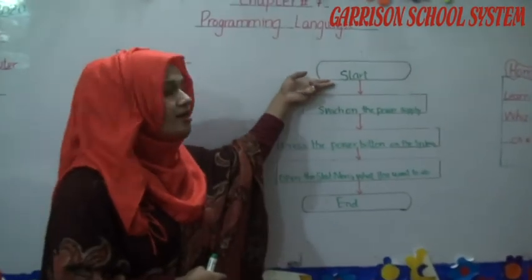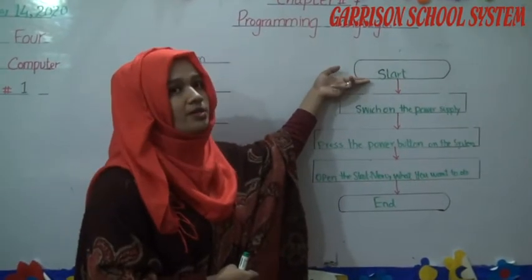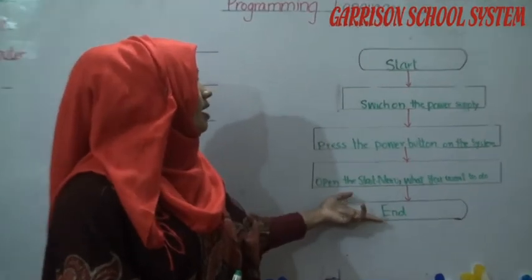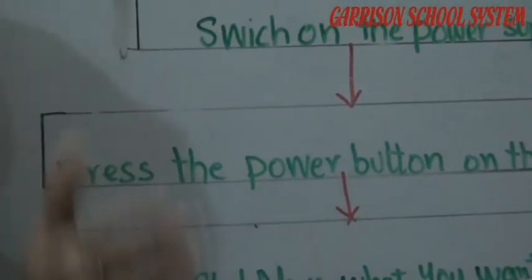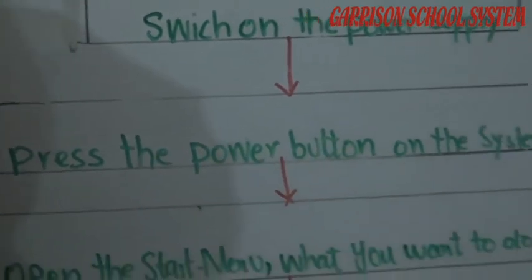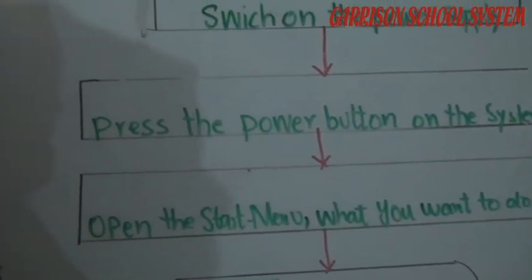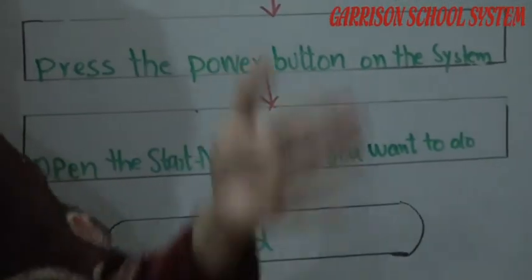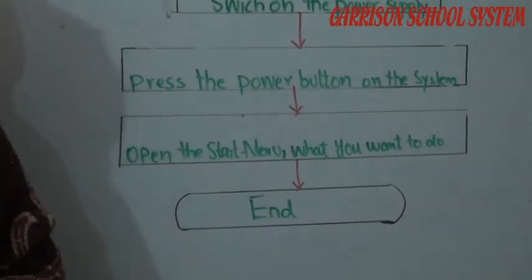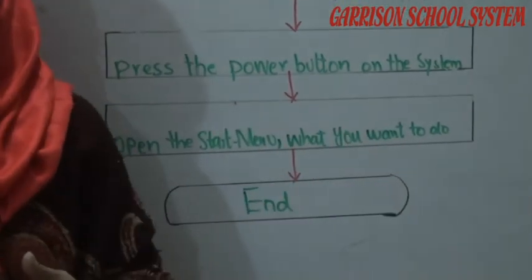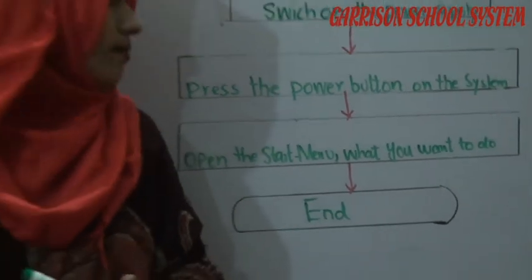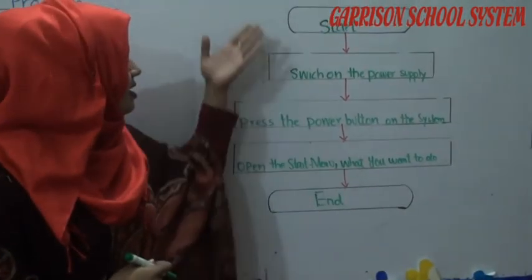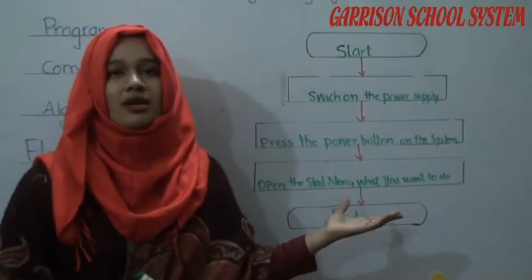You use the oval symbol to start and end of the program. Then comes processing: Switch on the power supply — aapne switch lagaya. Press the power button on the system unit. Open the start menu — aapke saamne desktop screen show hogi. What you want to do on the computer — for example, if you want to do painting, you can choose the paintbrush program. Using this flowchart, you can do any task.